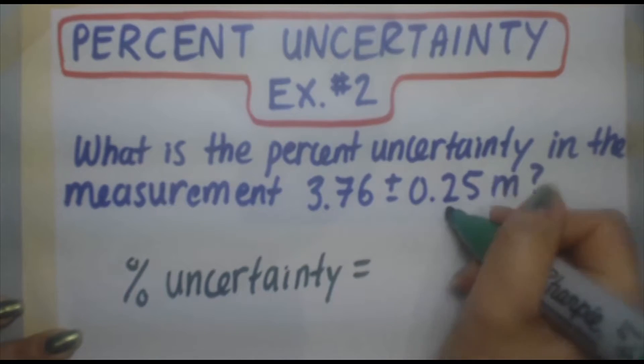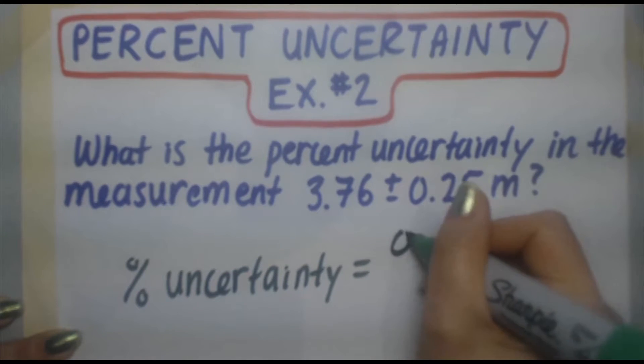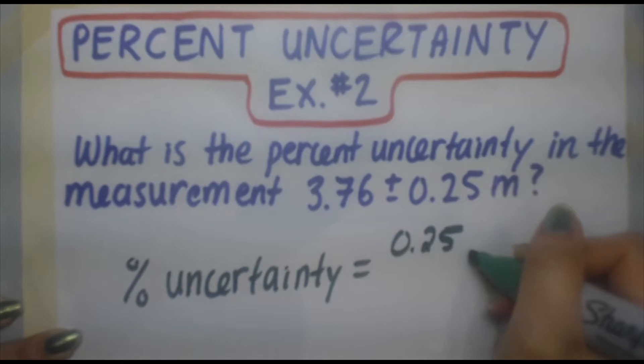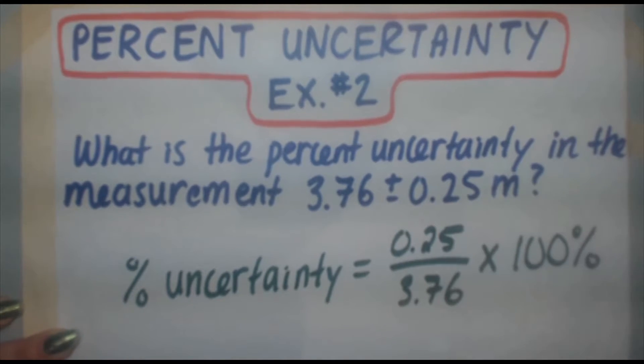You write down your error on top, 0.25, and you divide that by 3.76. That gets multiplied by 100%.